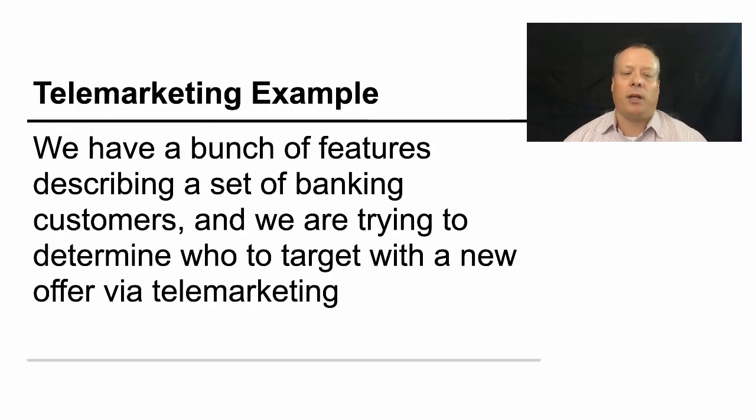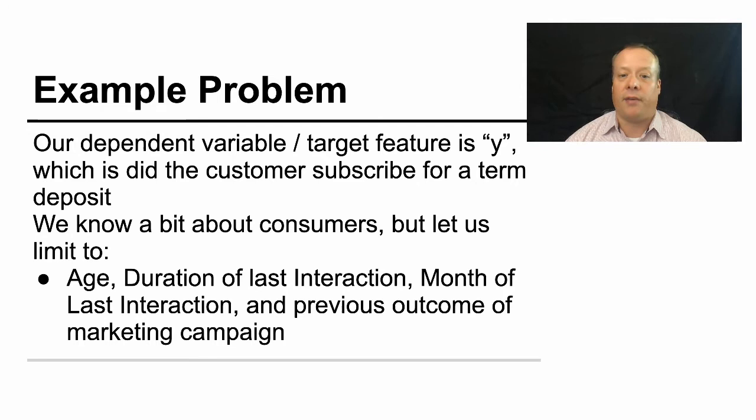We're going to use that telemarketing example from before. So we have a bunch of features describing a set of banking customers, and we're trying to determine who to target with a new offer via telemarketing. Our dependent variable target feature is Y, as we described before, which is did the customer subscribe for a term deposit?